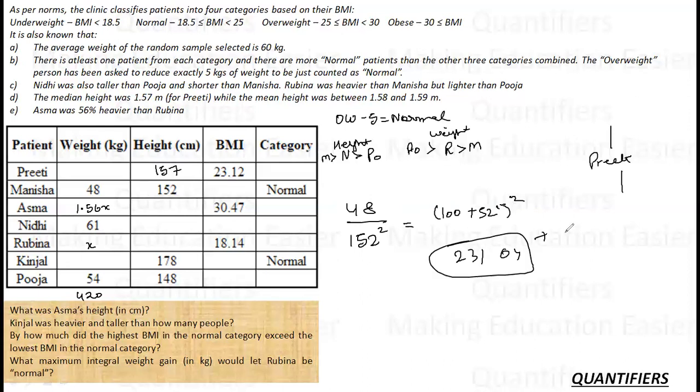This is how you are going to obtain the square. And even then the task is not complete because the BMI is actually 48 upon 2.31, which sums up to around 20.8 or 20.7, approximately, or 20.77 on the lower range.